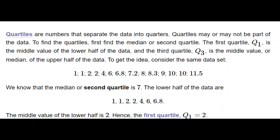So Q1, the first quartile, is the median of all the points less than 7, and Q3 is the median of all the points greater than 7. Considering the data set from 1 to 11.5, we look at the lower half — below 7 — starting from 1 to 6.8.